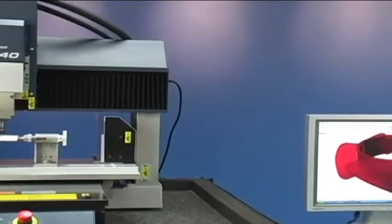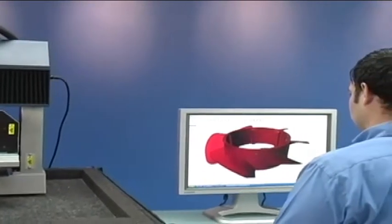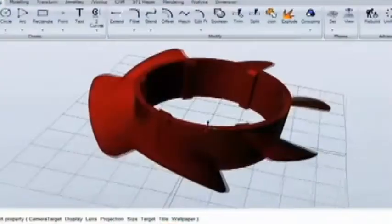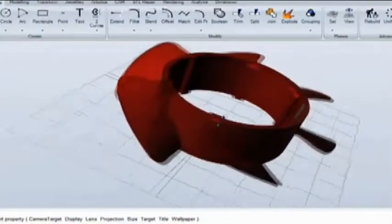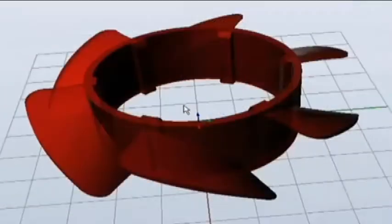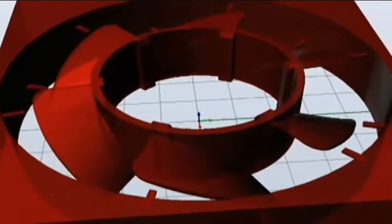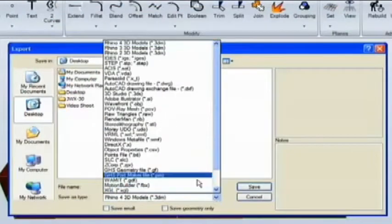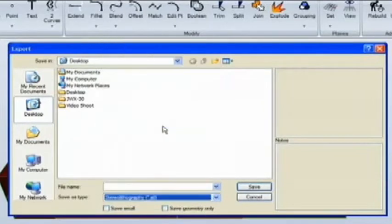Let's begin by showing you how easy the SRP process is. We start with the model you created in your design software. Add the supports needed for milling. After you've finalized your model, save it to industry standard STL file format.